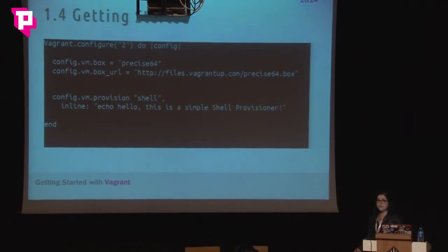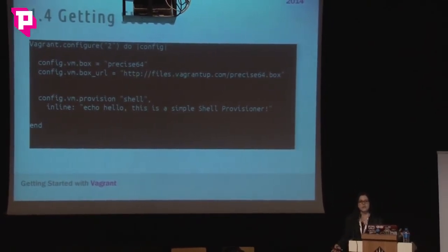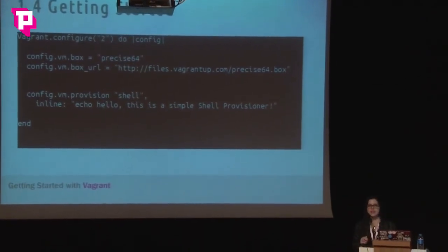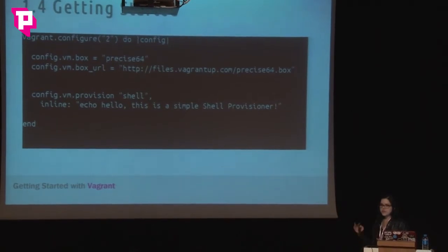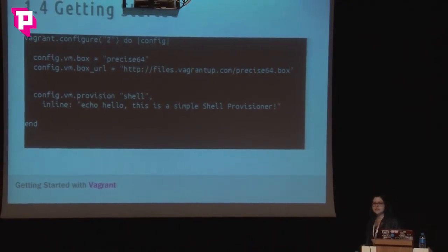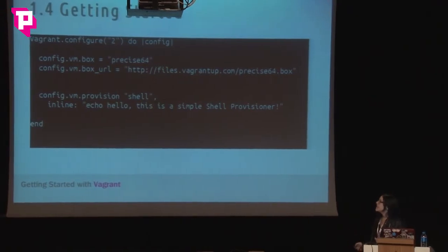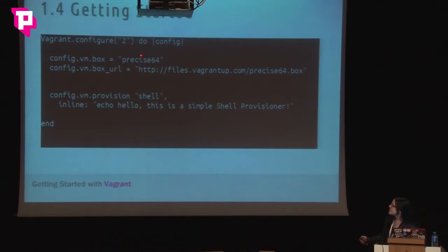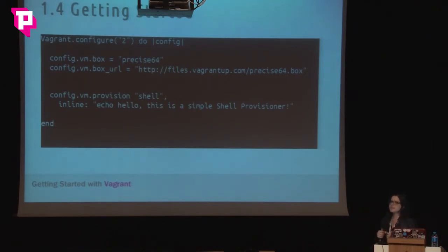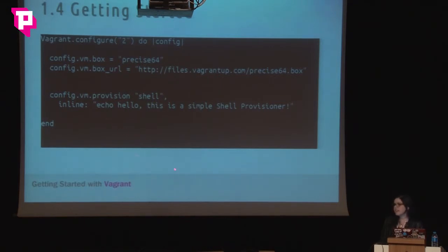The Vagrantfile is the file that contains all the Vagrant settings, especially for the virtual machine — where you define the box, the network, the provisioner you're going to use, and other settings. Now you have Vagrant and VirtualBox installed, you go to your project root and create this file called Vagrantfile. It's a Ruby file, but it's very simple — just some variable definitions. You set up the box here, with a name shared across the system so Vagrant won't download it again. It downloads only once from the URL. And this is a basic provision — just a shell inline echo command.